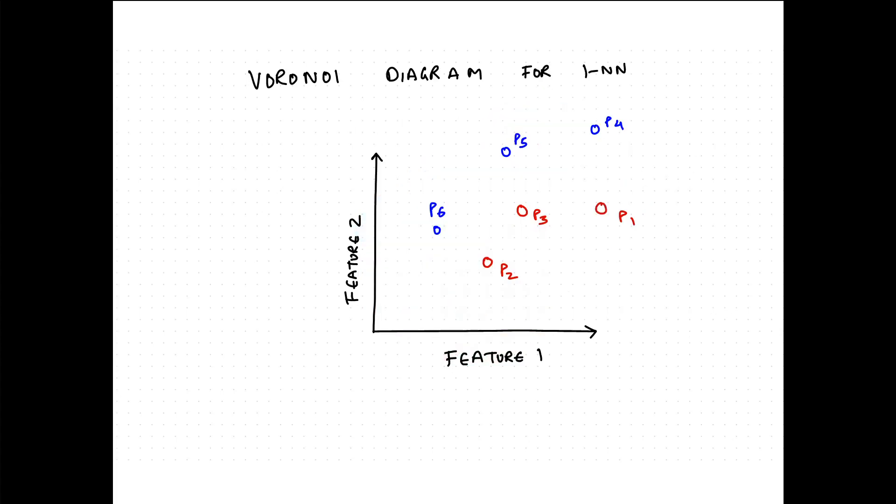Now let's apply the same intuition when we have more points — three red points P1, P2, P3 and three blue points P4, P5, and P6. You should pause and draw in your notebooks what you think the classification boundary for 1-NN would be. The intuition is the same: for any test point, find the closest training point and assign that point's class. Since there are more examples this is slightly more complicated than the previous example.